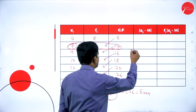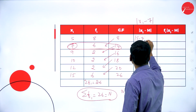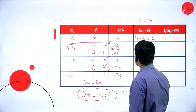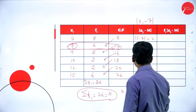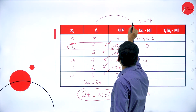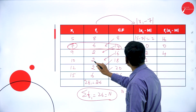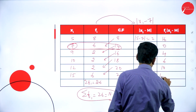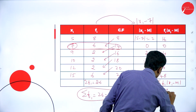Now substitute M equals 7. Compute mod of xi minus M: 5 minus 7 gives 2, 7 minus 7 is 0, 9 minus 7 is 2, 10 minus 7 is 3, 12 minus 7 is 5, 15 minus 7 is 8. Now multiply fi into xi minus M: 8 into 2 is 16, 6 into 0 is 0, 2 into 2 is 4, 2 into 3 is 6, 2 into 5 is 10, 6 into 8 is 48. Adding these: sigma fi into mod of xi minus M is equal to 84.